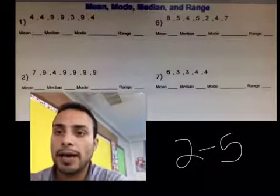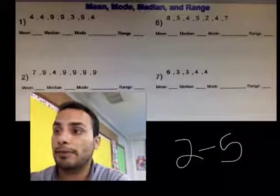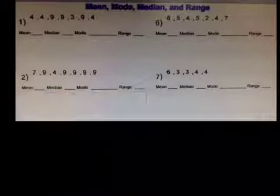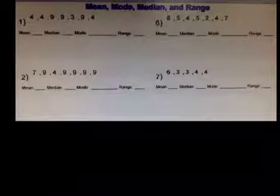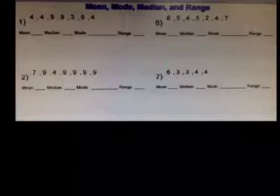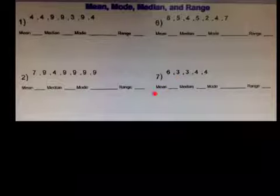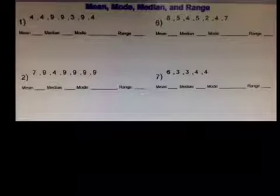Let's go ahead and do number 7. This will also be your key answer. So for number 7 right here we have the data, the numbers given 6, 3, 3, 4, 4. The first question we are asked is to find the mean. The mean, another word for mean, is average.